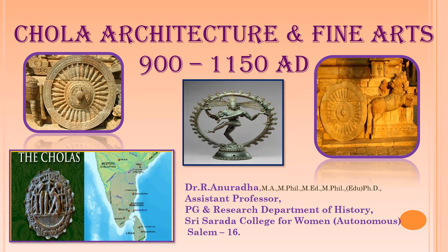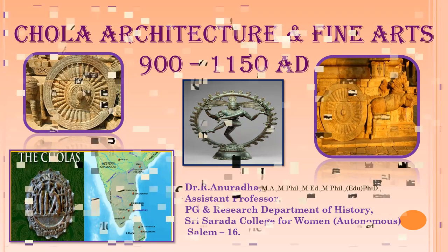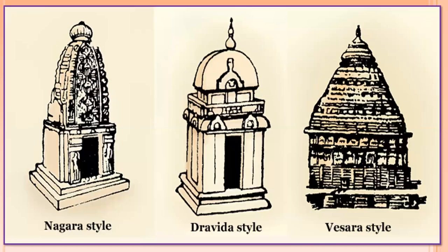By the 7th century AD, the key features of the Hindu temple were established in theoretical texts on temple architecture and building methods. Three styles of temple were identified: they were Nagara, Dravida, and Vesara. The Dravidian style, or South Indian temple style, is an architectural idiom in Hindu temple architecture that emerged in the southern part of the Indian subcontinent.